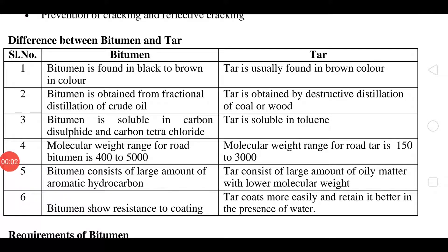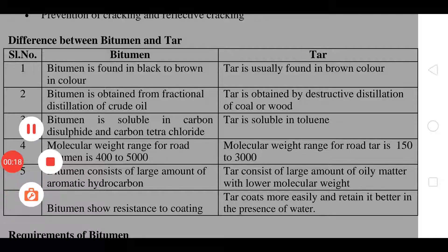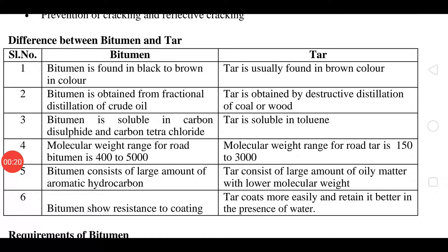Welcome to JCE Connect. In earlier presentations we had seen bituminous material and basic tests on bituminous material. Today we will discuss the difference between bitumen and tar. Bitumen is found in black to brown color, dark black color, and tar is usually found in brown color with respect to physical appearance.